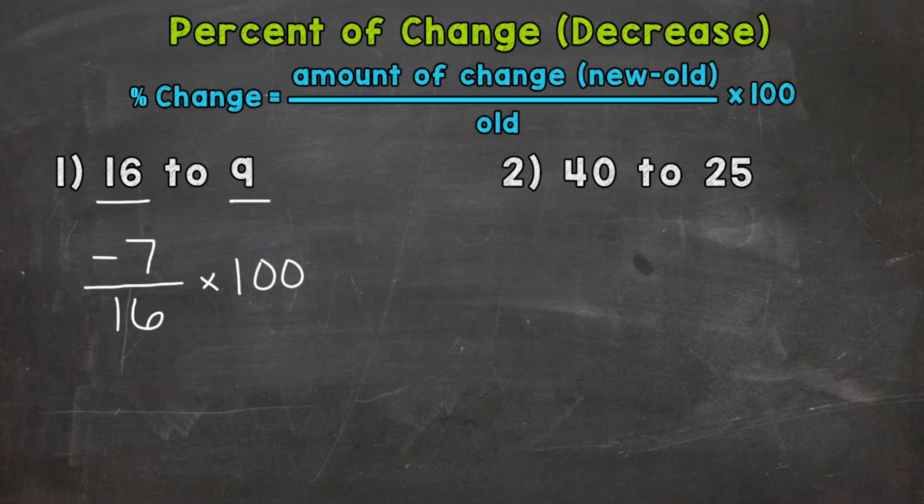So negative 7 divided by 16, that's going to give us negative 0.4375. And we multiply that by 100.